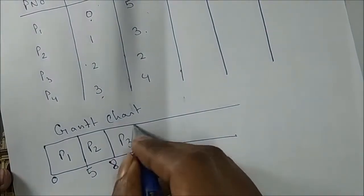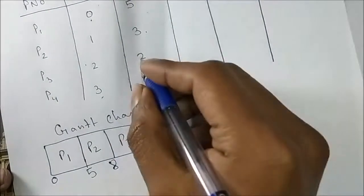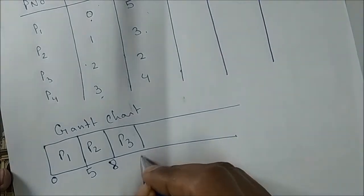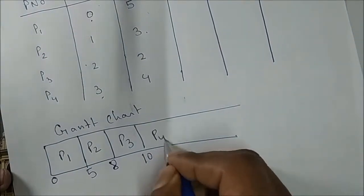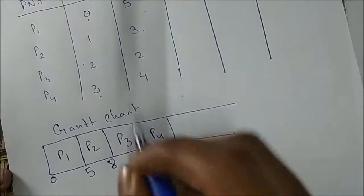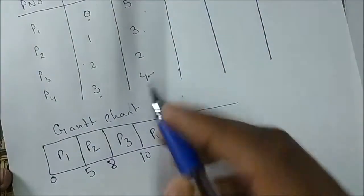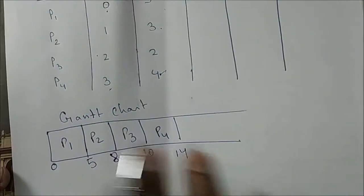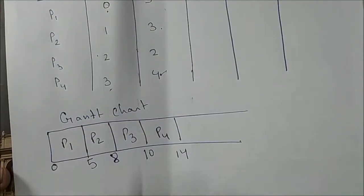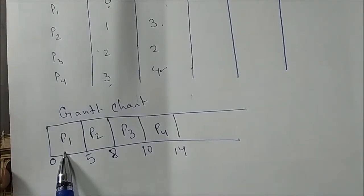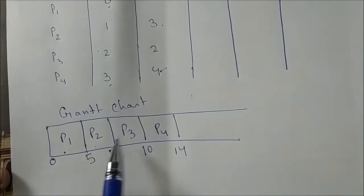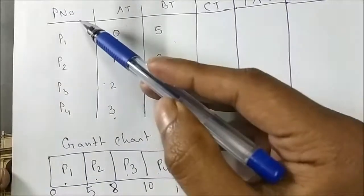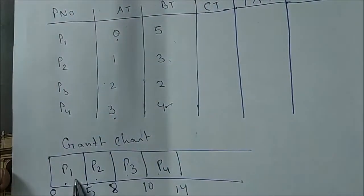Then P3 comes and runs for 2 units, completing at 10. Then P4 runs for 4 units, completing at 14. So the Gantt chart shows: P1, then P2, then P3, then P4 — because it is First Come First Serve.